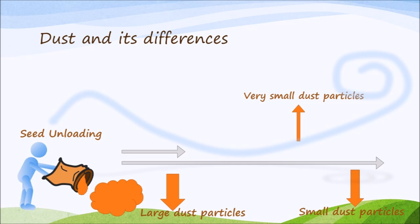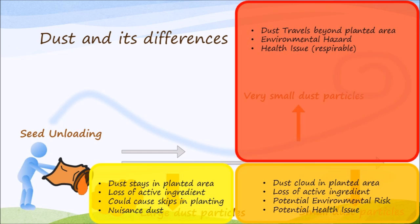As you can see from this diagram, your larger dust particles are going to fall near where you're working. Smaller dust particles will travel further still, and very small dust particles can become airborne. The biggest problem by far is the small or very small dust, which can travel beyond the planted area, can be an environmental hazard, and is obviously a health issue because it becomes respirable.